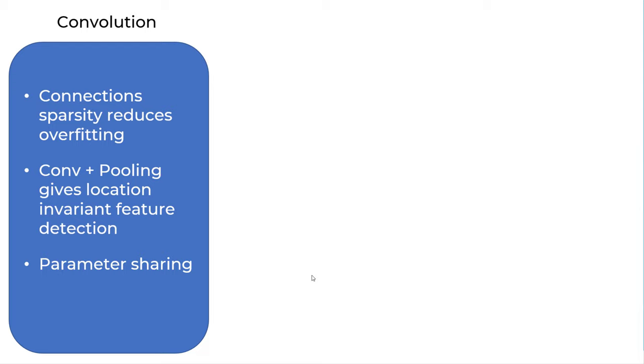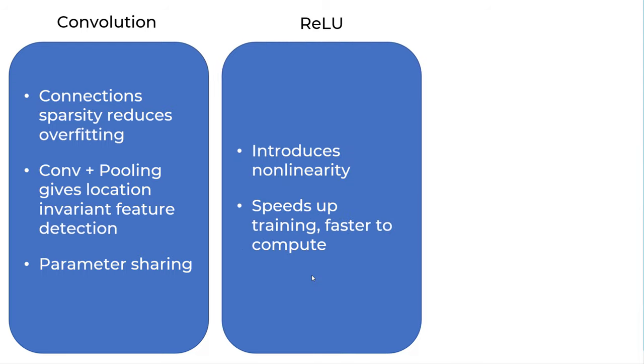The second benefit is convolution and pooling operation combined gives you a location invariant feature detection. Which means koalas eye could be in the left corner, in the right corner, anywhere. We will still detect it. Third is a parameter sharing, which is when you learn the parameters for a filter, you can apply them in the entire image.